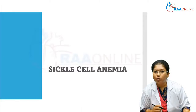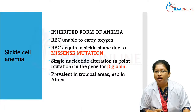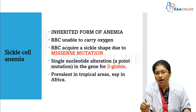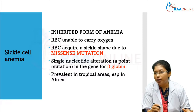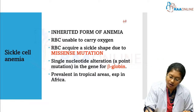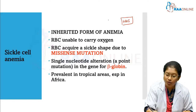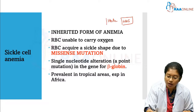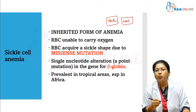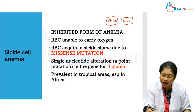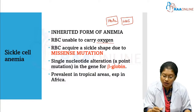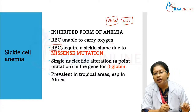First we will see about sickle cell anemia. Sickle cell anemia is the inherited form of anemia — autosomal recessive. The RBCs contain sickle hemoglobin, HbS. It is not the normal hemoglobin HbA2; it is replaced by HbS. If the RBC contains HbS, they are unable to carry oxygen.